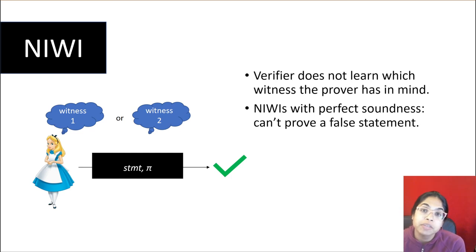The last building block I want to explain is the non-interactive witness indistinguishable proof. The non-interactive part means that our prover, Alice, can just pick her witness and statement and she can send out a proof in a single shot without having to interact with any verifier. The witness indistinguishable part means that even if there are multiple witnesses for which the relationship with the statement holds, that the verifier cannot figure out which witness it was that the prover used, even if they know what the witnesses are. One final thing, the NIWIs that we're concerned with have perfect soundness, which means you can't prove a false statement.